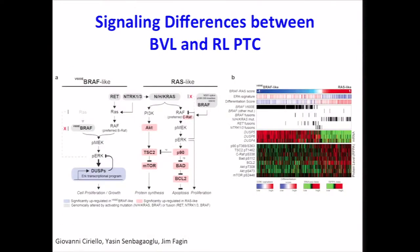Using messenger RNA and RPPA data, the group at Memorial spent significant time figuring out the signaling consequences of these two drivers. The key take-home point is that BRAF-like tumors signal pretty much exclusively through MAP kinase, while RAS tumors have a more complicated picture — a little more PI3 kinase but also some MAP kinase. This really shows there are fundamental differences between these tumor types.